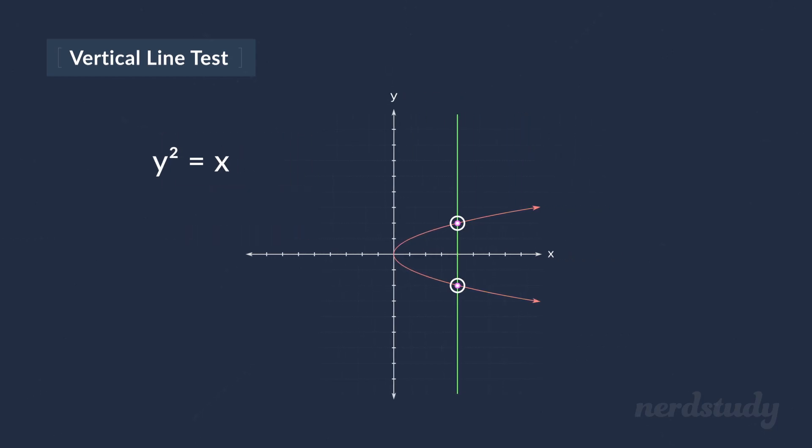The benefit of the vertical line test is that oftentimes we might not be provided an equation for the graph that we were provided like this example. So it allows us to just quickly eyeball whether or not the graph that we're looking at is a function.